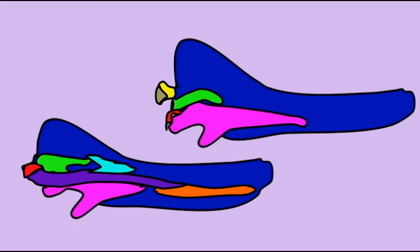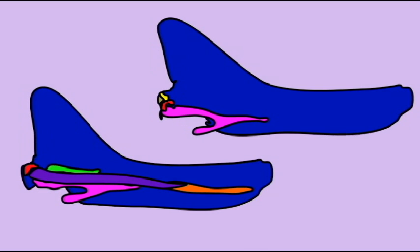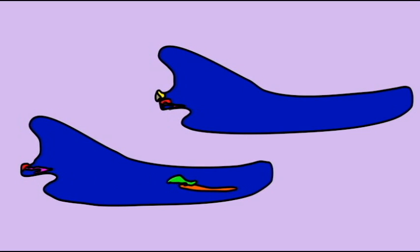Eventually, two jaw joints existed. Not only the ancestral joint, which in reptiles between, in these illustrations, the red and the yellow bones, the quadrate and the articular—this jaw joint was on its way out—but then also a new jaw joint was forming between the dentary bone and the temporal bone of the skull.